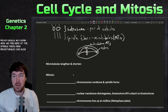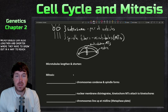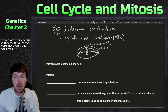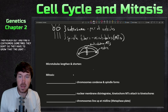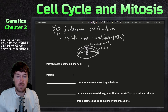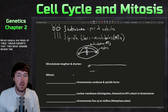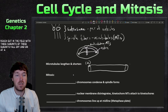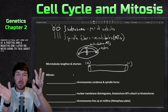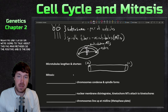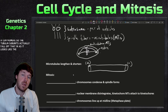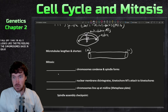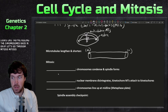Microtubules can lengthen and shorten as they grow out from the organizing center to find a centromere. They're made of tubulin subunits that wrap around to form a hollow tube. These subunits fall on and off at a positive end and a negative end. The positive end grabs the centromere, and as tubulin subunits fall off that end, it looks like the chromosome is being reeled back in — this is called the pac-man method.